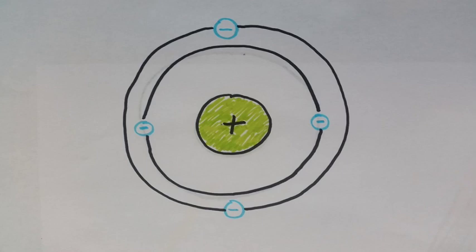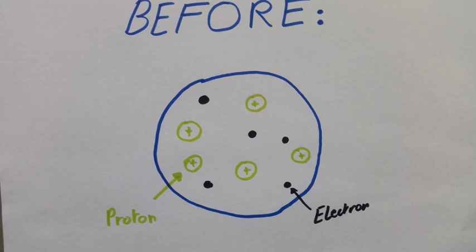But what you probably don't know is how this structure was discovered. Before this breakthrough experiment that I'm going to talk to you about, scientists believe atoms were just circles in which protons and electrons could just float around.